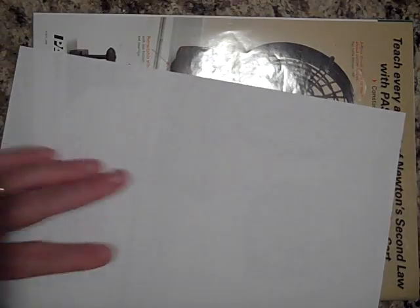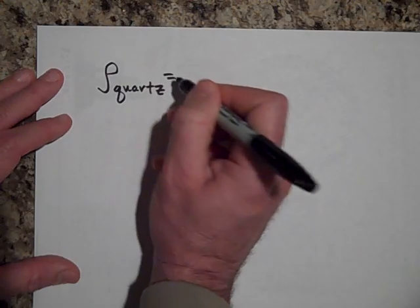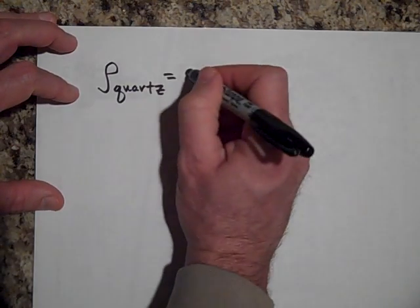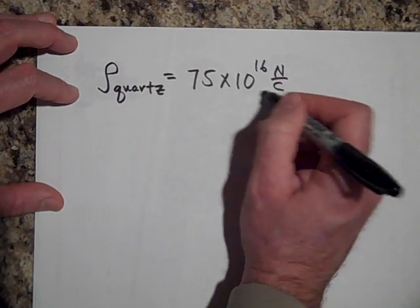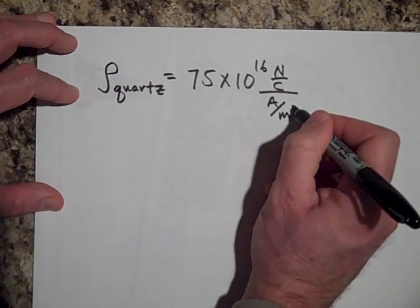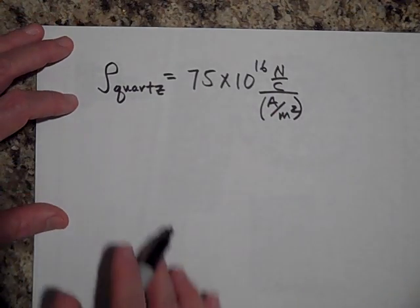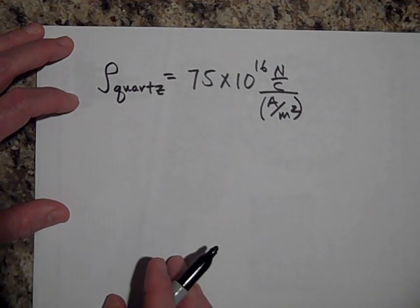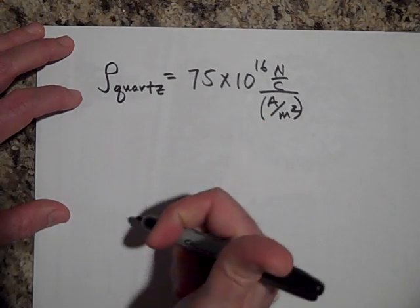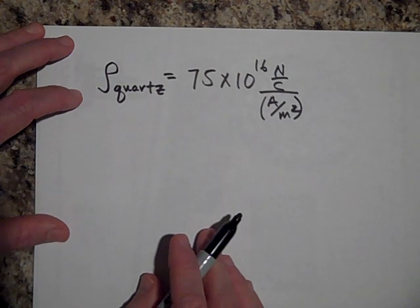Let's compare that to the resistivity of quartz. The resistivity of quartz is a lot larger. It's 75 times 10 to the 16th newtons per coulomb per amp per square meter. So if you want 1 amp per square meter, you'll need to put that much field. That's a lot larger. The other one was 10 to the negative eighth. This is to the positive 16th. So quartz, you really need to up the electric field a whole lot just to get the same current density. So quartz is not a very good conductor of electricity.